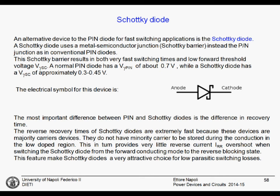The Schottky diode can be thought of as an alternative to a PIN diode when very fast switching is required. From the manufacturer's point of view, the Schottky diode uses a metal-to-semiconductor junction — a Schottky barrier — instead of the PIN junction, to block the current in reverse conduction. The Schottky barrier usually provides a very small forward threshold voltage and also a fast switching time.